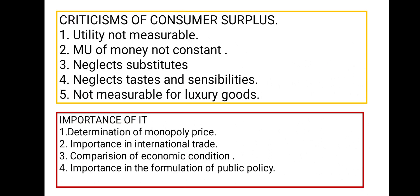Now the criticism of consumer surplus: utility is not measurable. The marginal utility of money is not constant. In consumer surplus we also neglect substitute products — for example, if you can buy apple, orange, or a substitute, those substitutes are neglected. It also neglects tastes and sensibilities. Consumer surplus is not measurable for luxury goods.